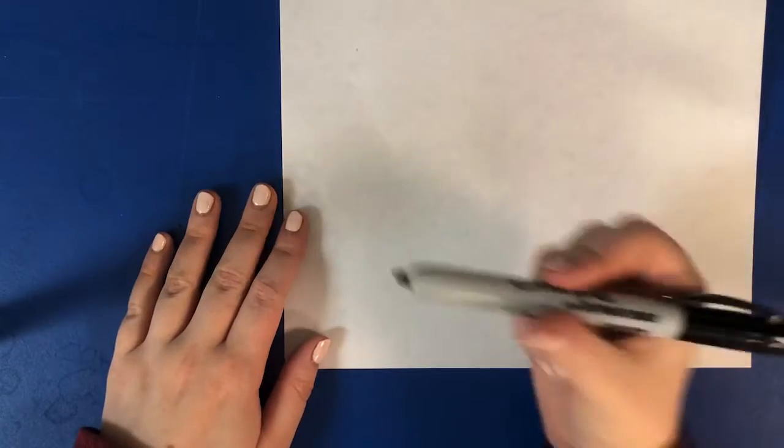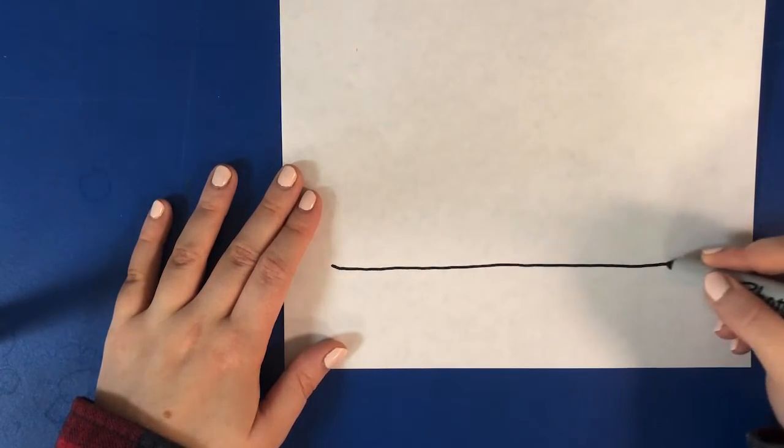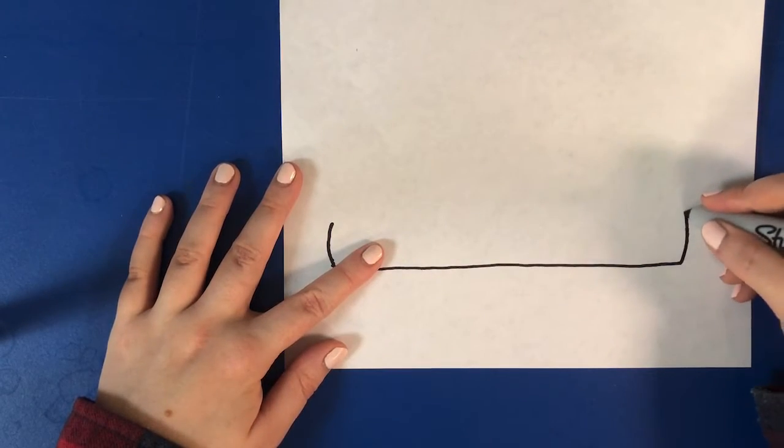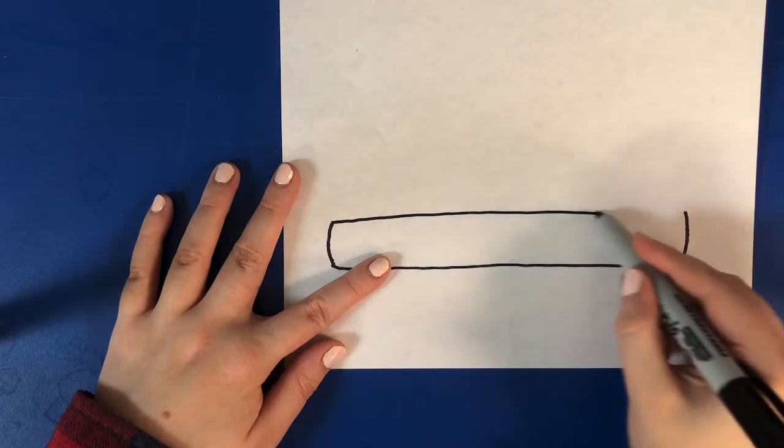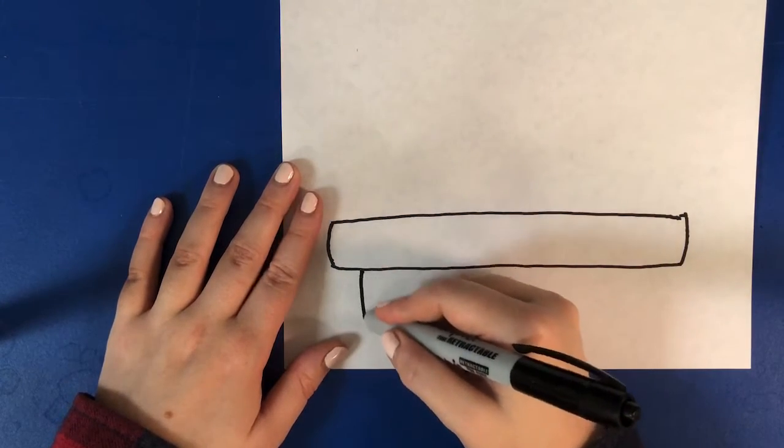Alright, so for this school bus drawing we're going to start at the bottom with a straight line. Then I'm going to bring it up on both sides and attach that at the top, and this is going to be the bumper for your school bus. So let's go ahead and draw our two wheels.